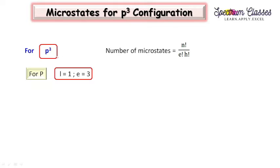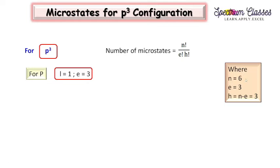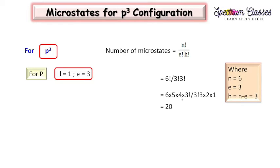Here I have the p³ configuration. First I will calculate the number of microstates. The formula is: number of microstates = n! / (e! × h!), where n is the maximum occupancy of the orbital. For a p orbital, n = 6. There are 3 electrons, so e = 3, and h = n − e = 6 − 3 = 3. Putting these values in: 6! / (3! × 3!) = 20. So p³ has 20 microstates.